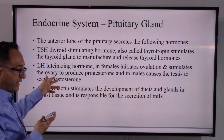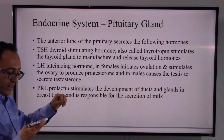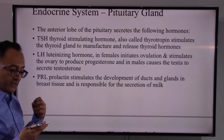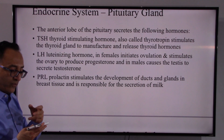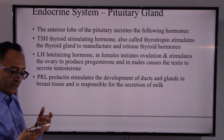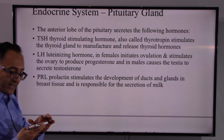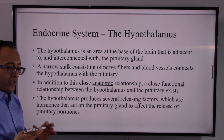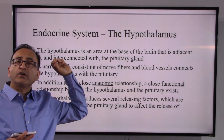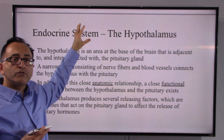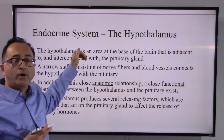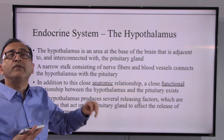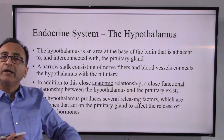The pituitary also secretes TSH, which activates the thyroid and parathyroid. The luteinizing hormone acts on the gonads in both males and females. Additionally, there is a hormone that stimulates the secretion of milk in the breast tissue. So the pituitary gland releases hormones that reach out to the thyroid, parathyroid, adrenal, and gonads, which in turn release additional hormones.